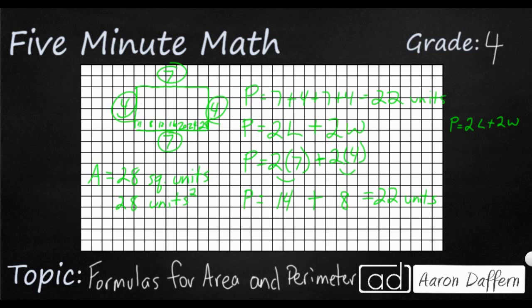Well, you notice I skip counted by 4 because my width is 4. How many times did I skip count by 4? 1, 2, 3, 4, 5, 6, 7. Area is a really simple equation to use.